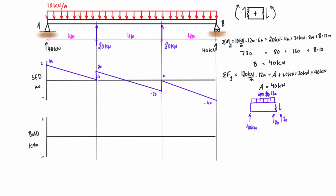Extending the free body diagram all the way to just the left of point B, the distributed load updates to 120 kilonewtons. 120 minus 80 means the internal shear force needs to be 40 kilonewtons pressing up, giving a value of negative 40. As a check, a free body diagram infinitesimally close to point B gives just the 40 kN reaction pressing up, requiring a 40 kN shear pressing down — opposite the sign convention — so negative 40, which confirms our diagram is correct.